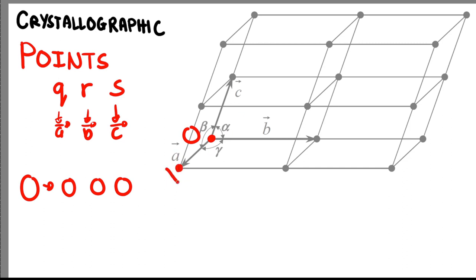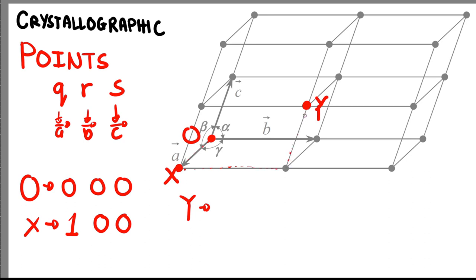For point X, this would be one unit along A and no units along B and C, so this would be 1 0 0. For point Y, we're translating one unit along A, one unit along B, and one unit along C to get to that point, so this will be 1 1 1. Notice that even though the lengths of A, B, and C are different, it's still 1 1 1, since Q, R, S are fractional distances along A, B, and C directions.